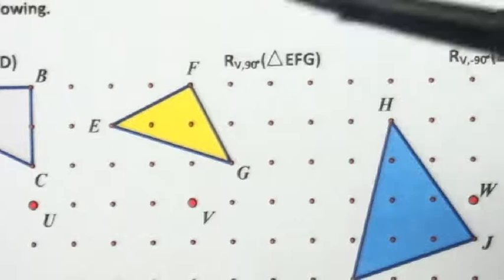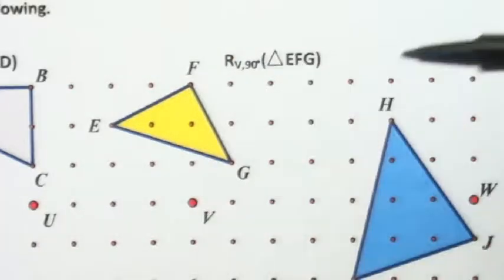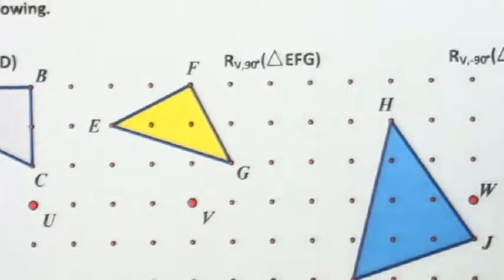This says to rotate about point V, 90 degrees, triangle EFG, and so on.